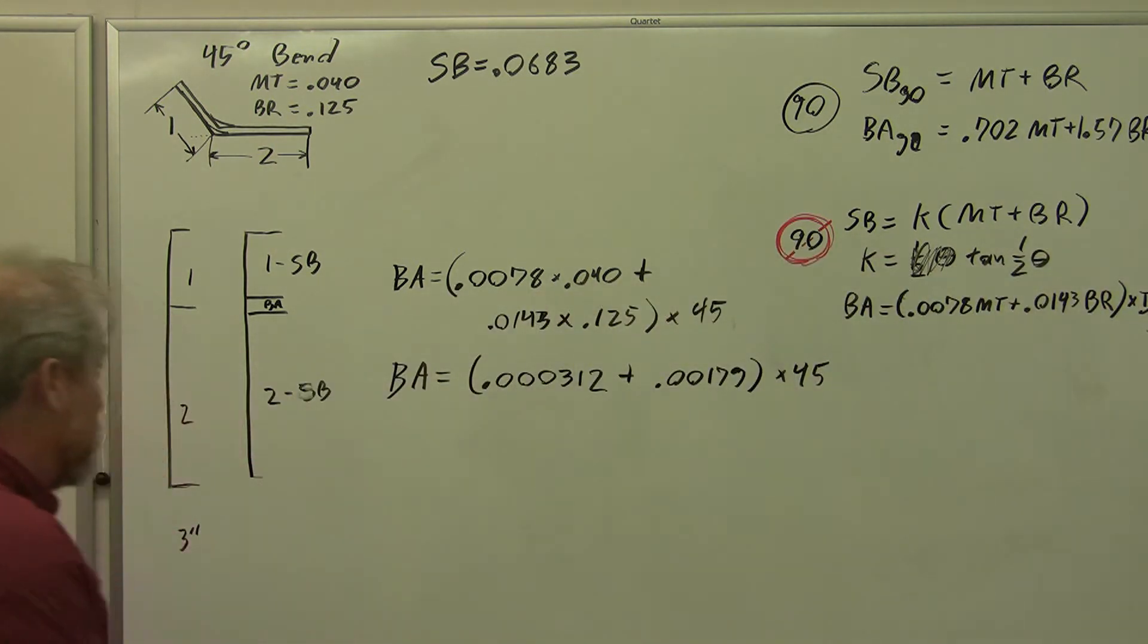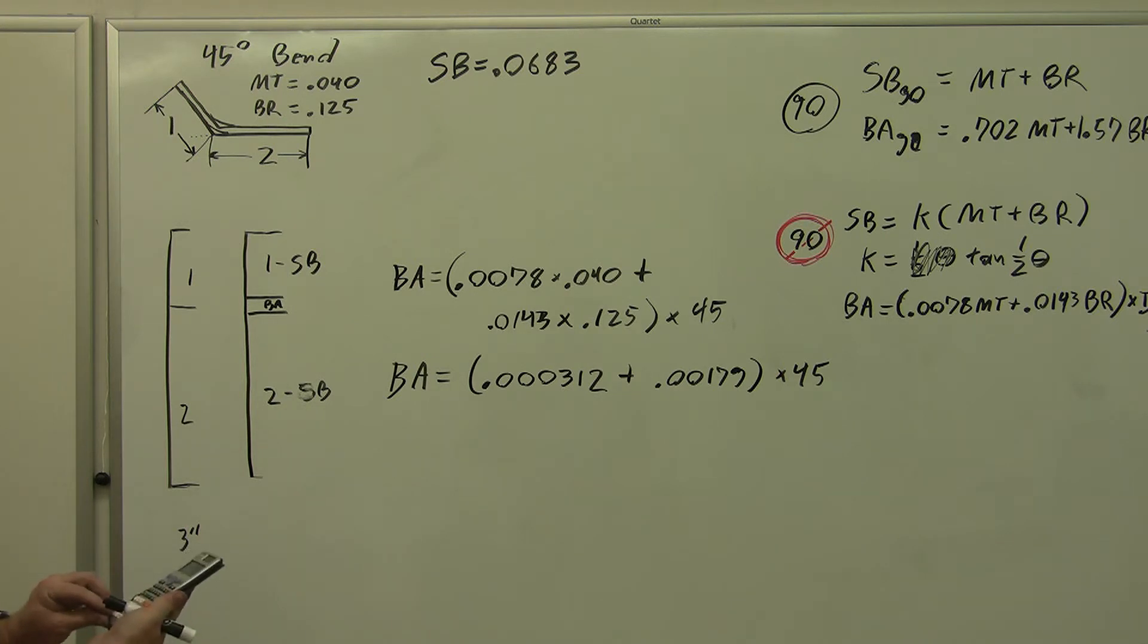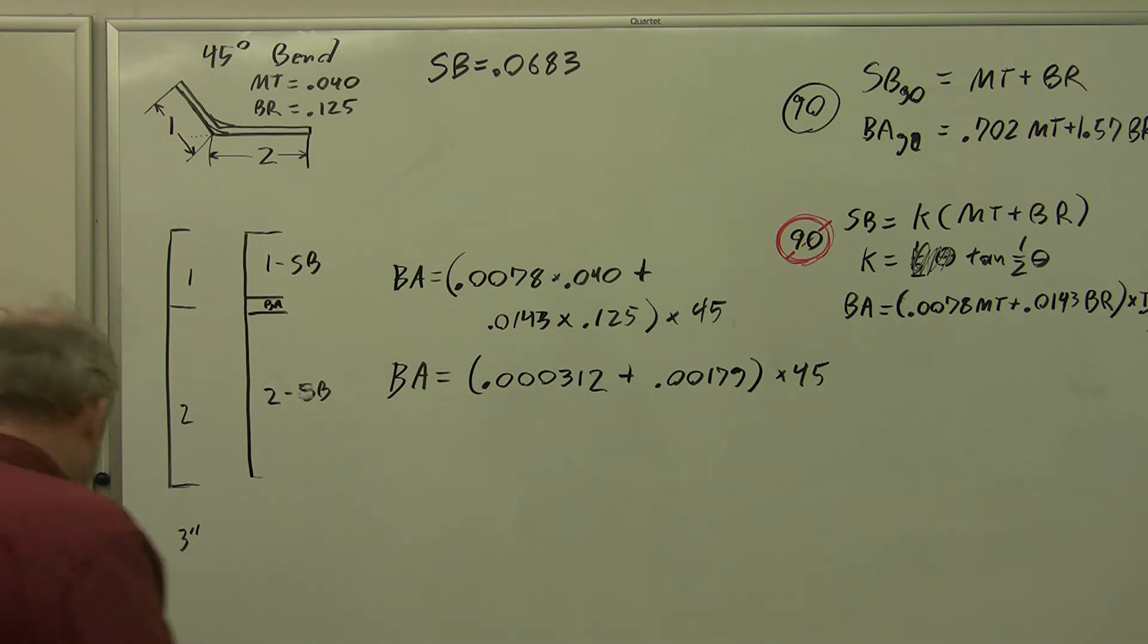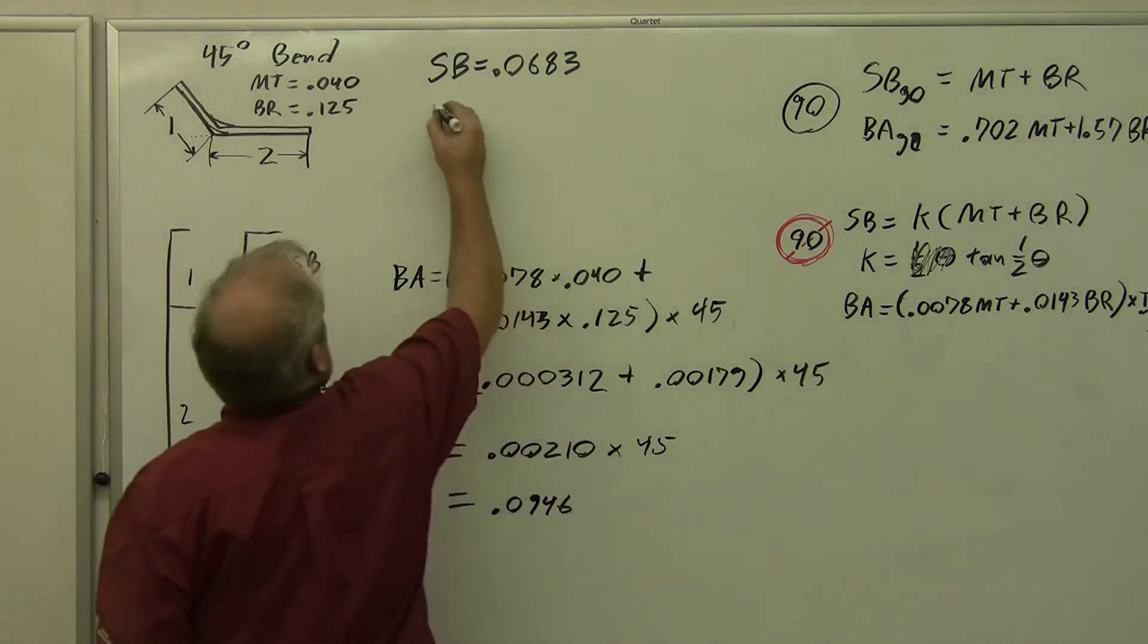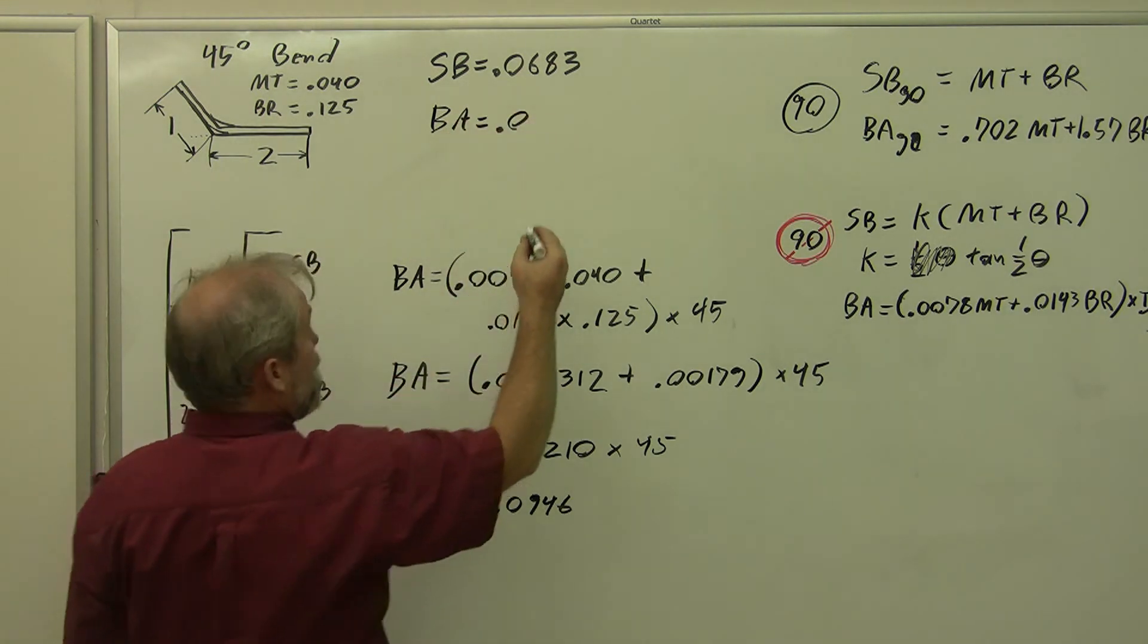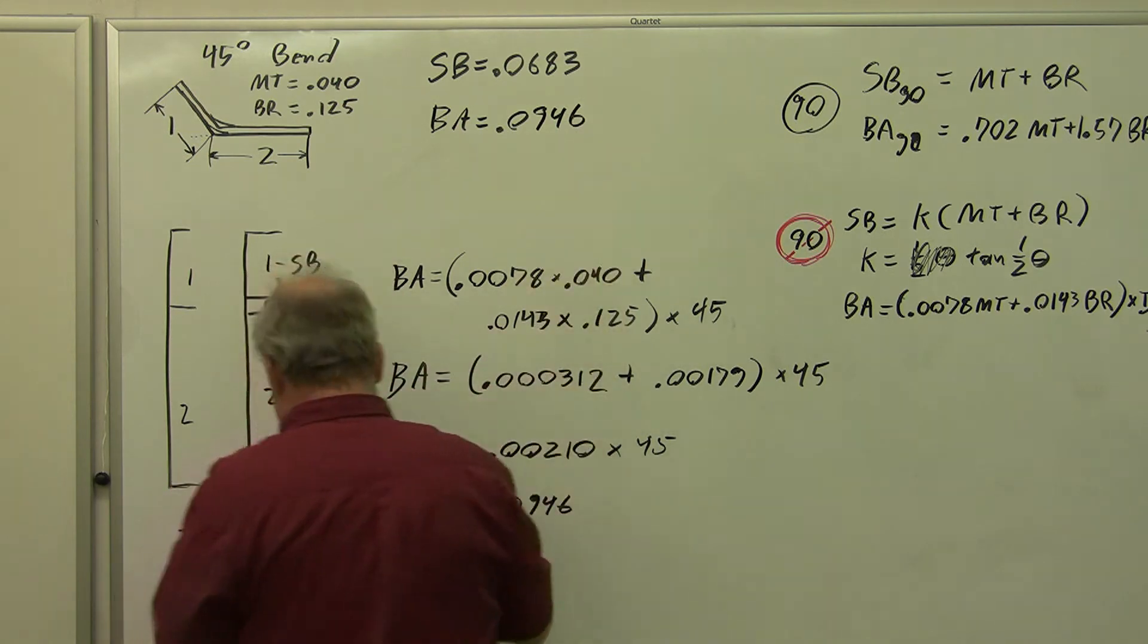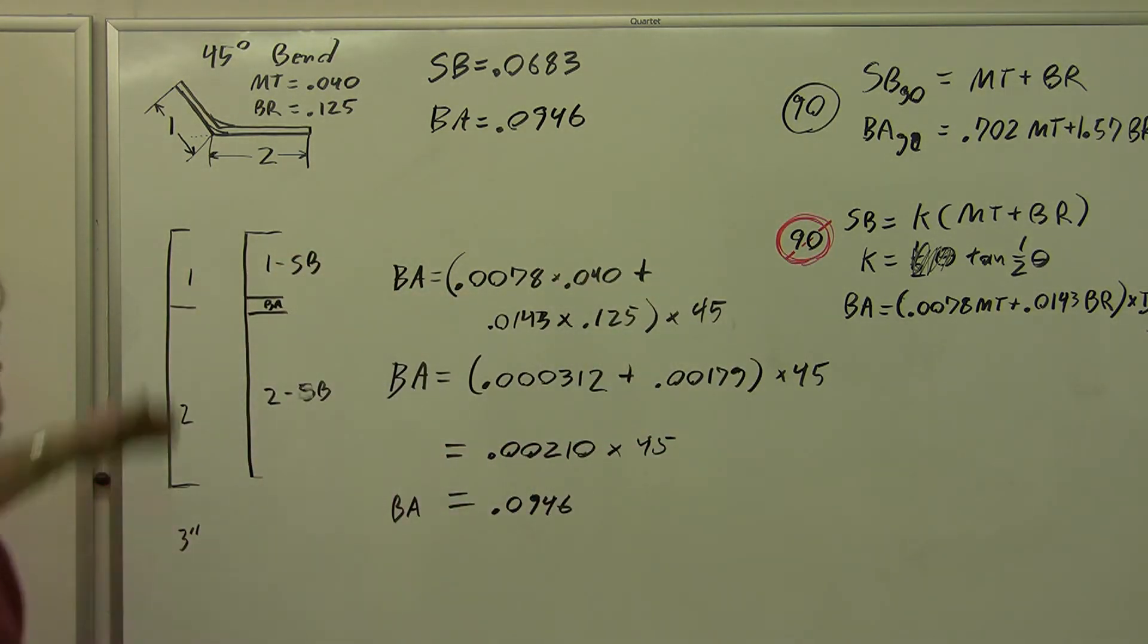We need to add these two and I get 0.000312 plus 0.00179 equals a total of 0.00210. That's this first term, times 45, which is equal to 0.0946. 0.0946 is my bend allowance. And now I have the numbers I need to begin substituting into this mess.